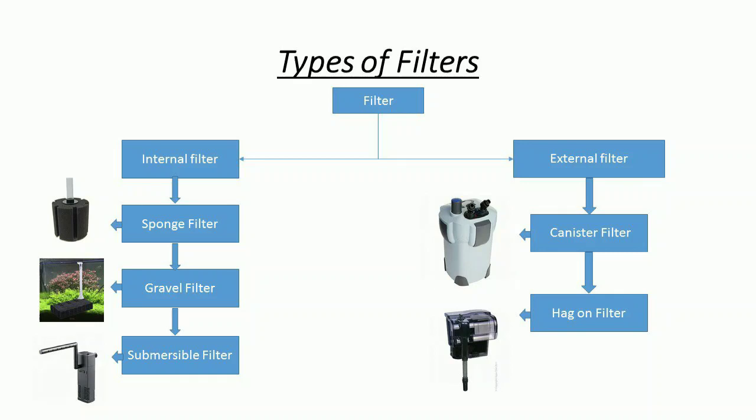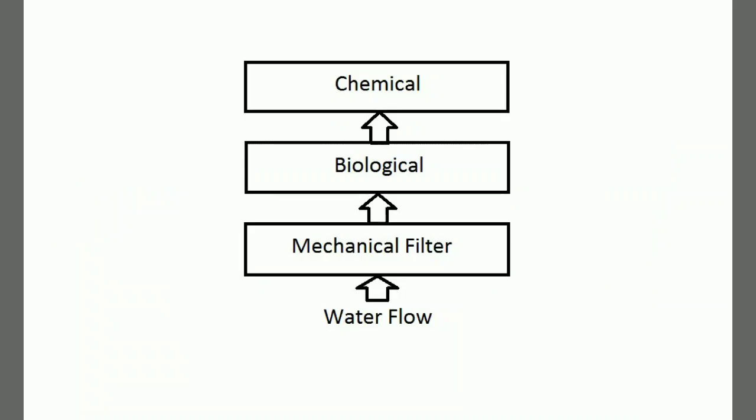In the aquascape filter system, we need to understand the filter media. There are three main types of filter media: mechanical filter media, chemical filter media, and biological filter media. The first type, mechanical filter media, uses a sponge to trap physical particles.